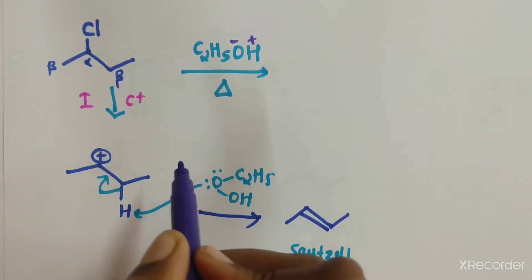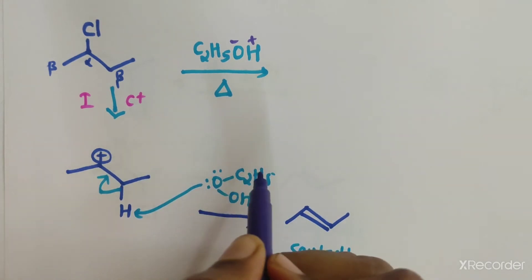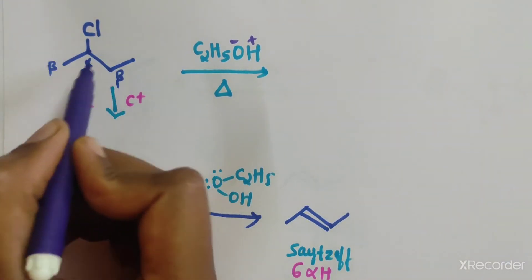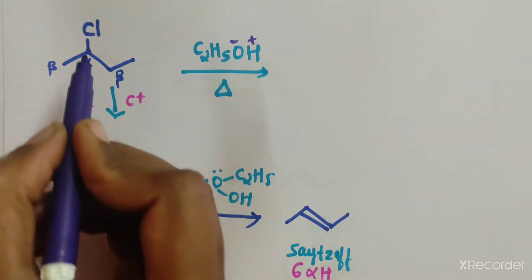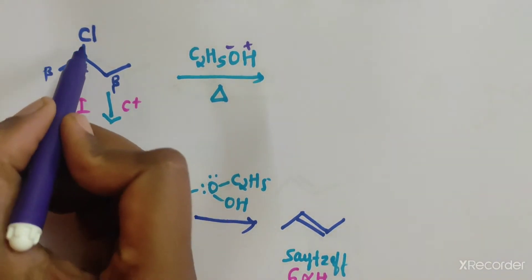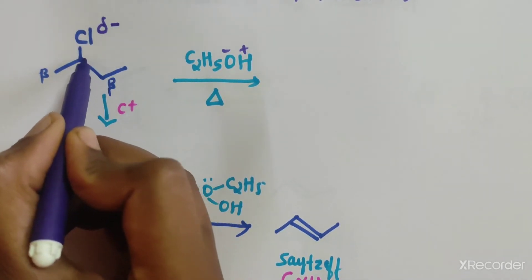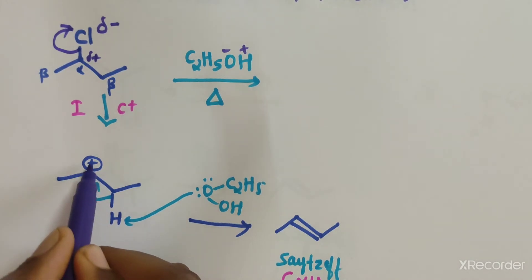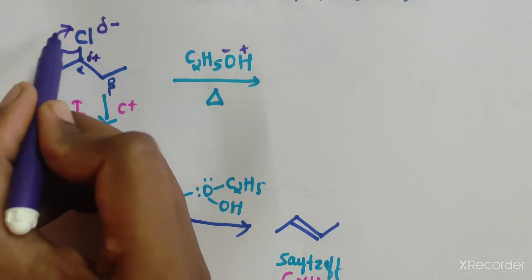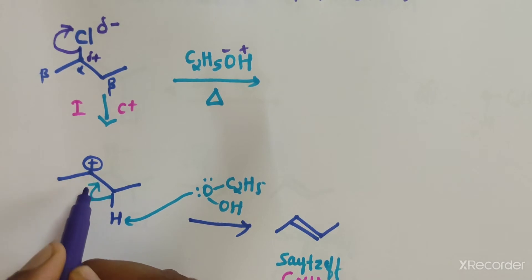In this E1 reaction, the first step is the generation of a carbocation. The C–Cl bond is polarized — Cl is delta minus and the carbon is delta plus. The electrons leave, and a positive charge is created on the carbon atom, forming a CH2+ carbocation.